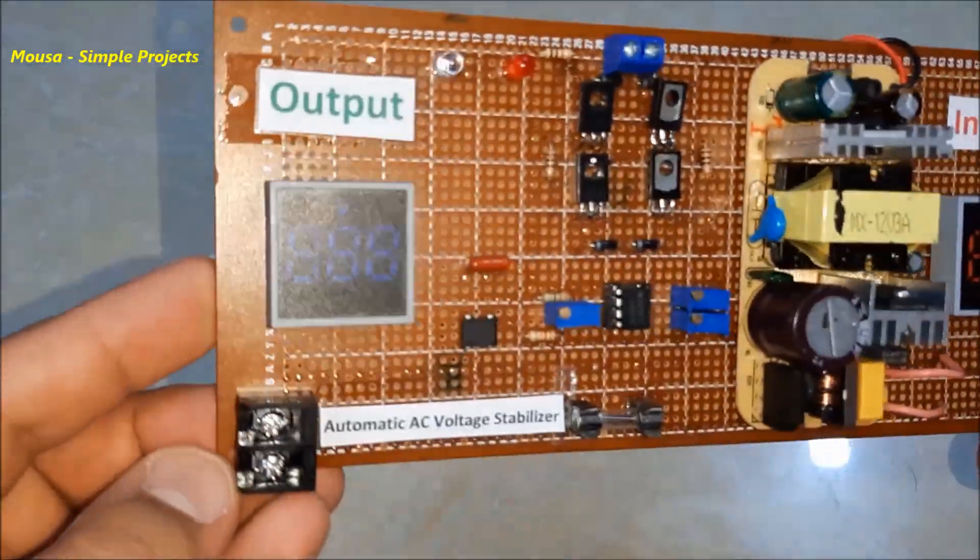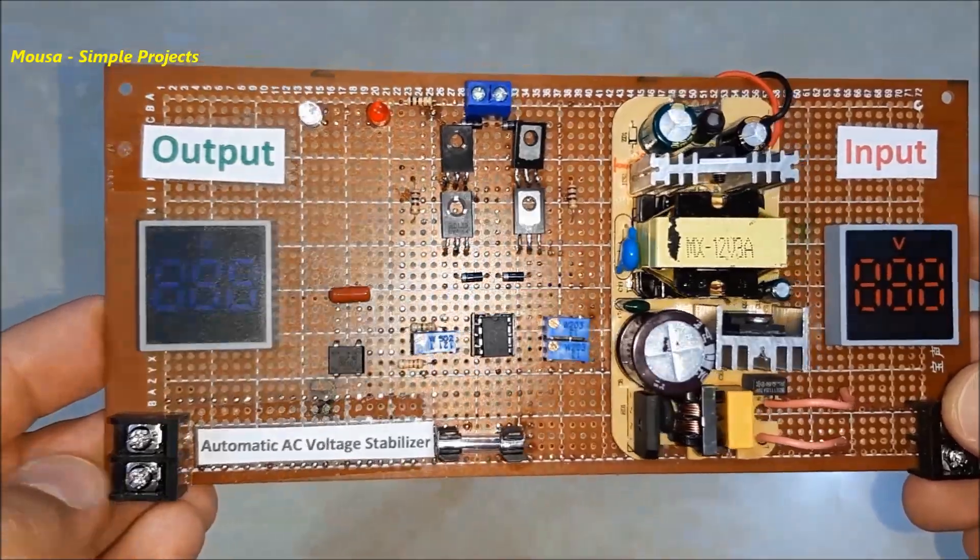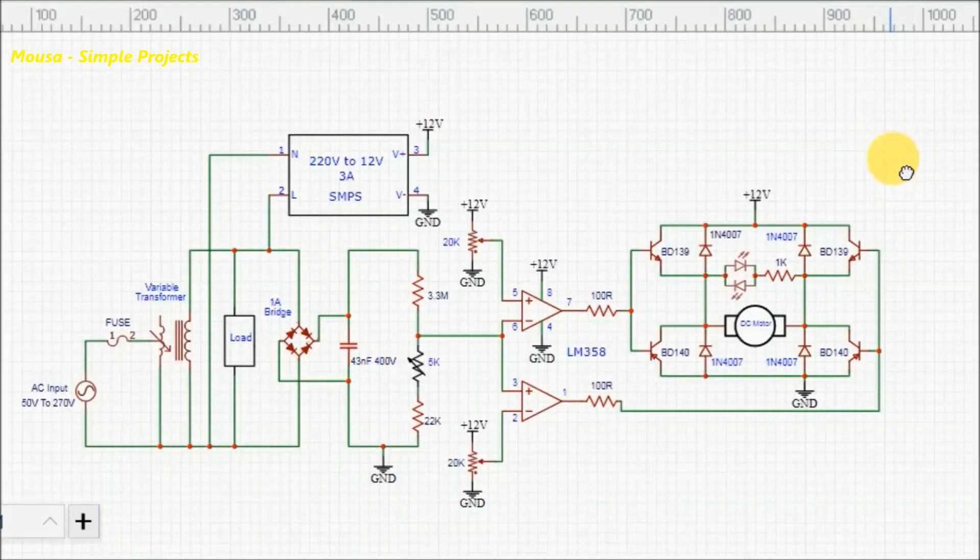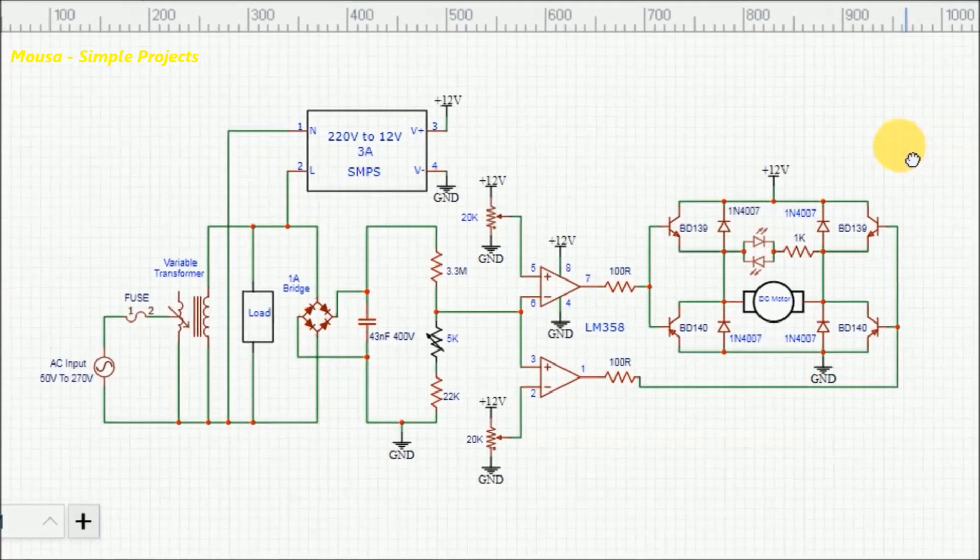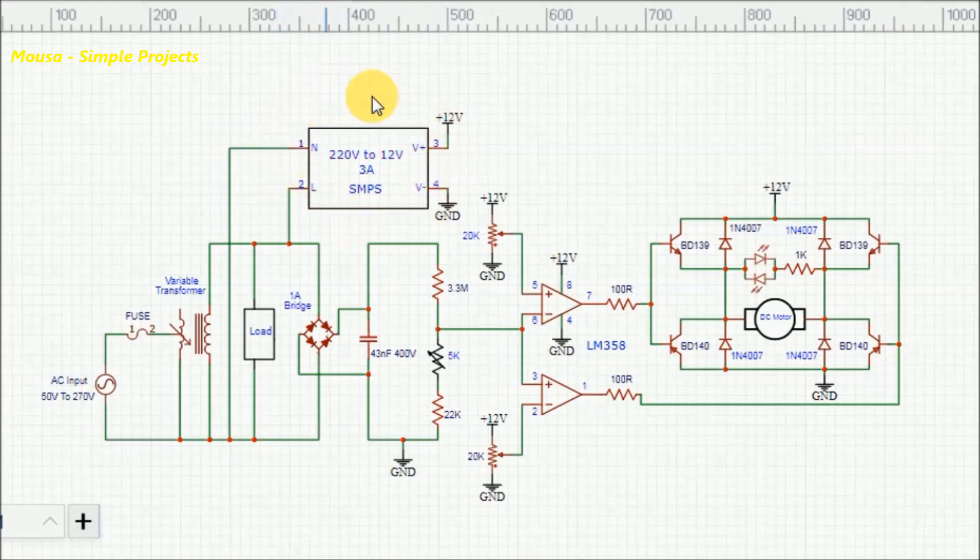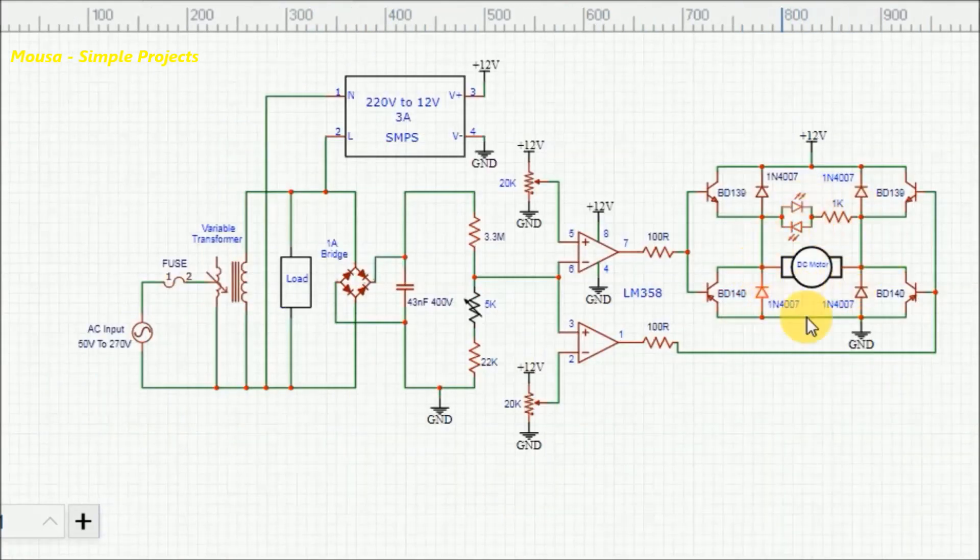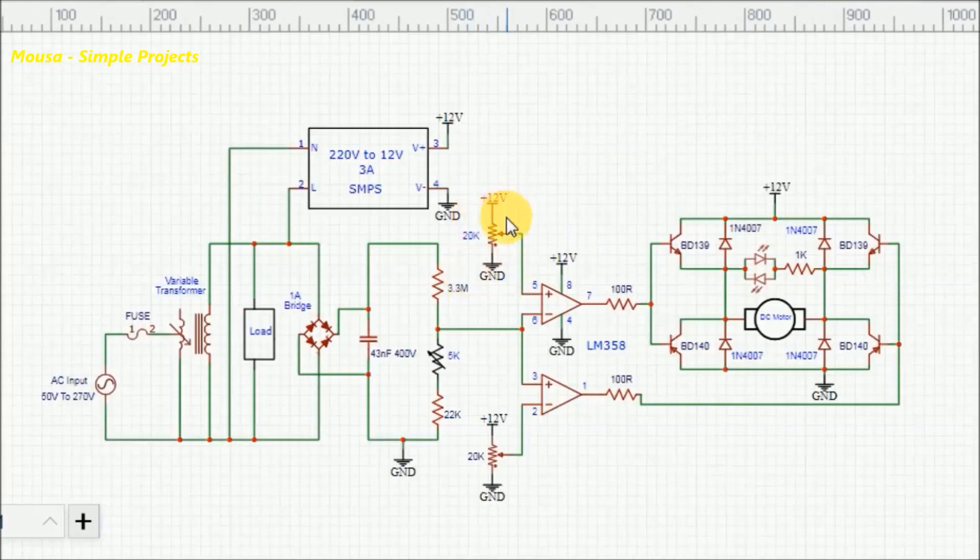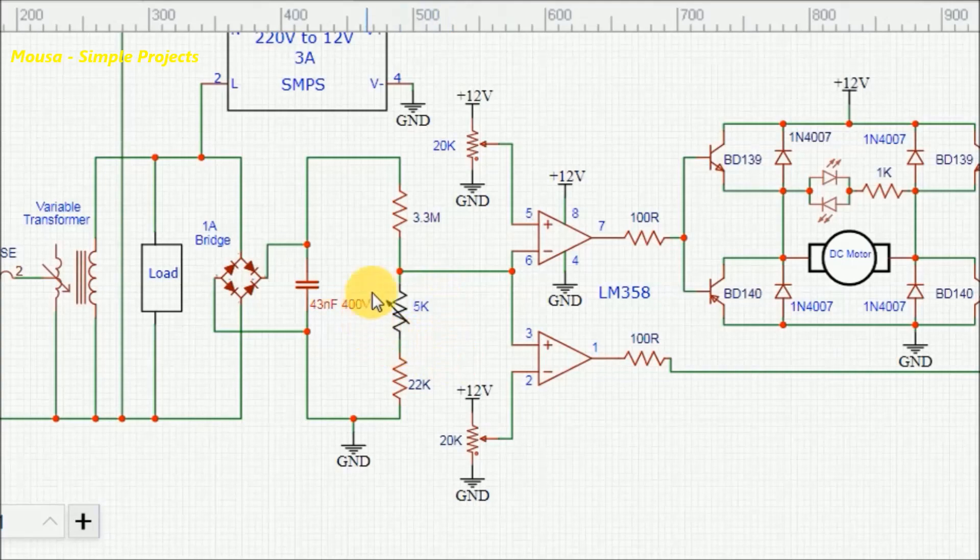Now let's talk about the controlling circuit. This is my circuit. This circuit consists of a 12 volt power supply, window comparator, H-bridge motor driver, and some resistor voltage dividers as voltage references and voltage sensor.